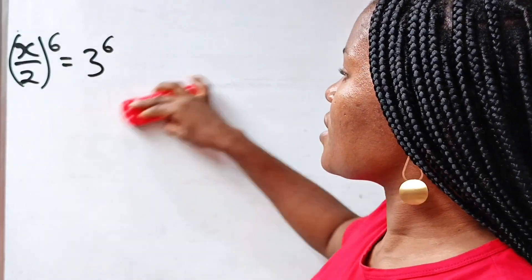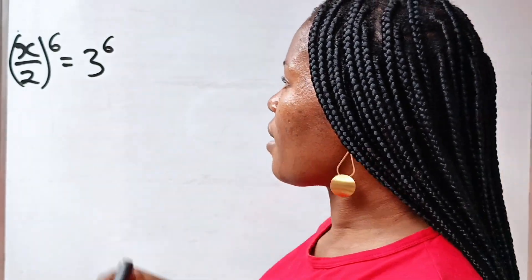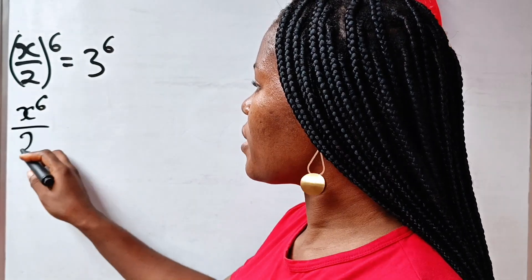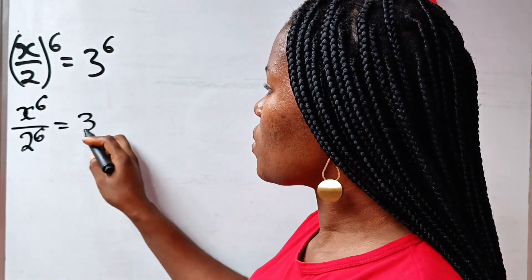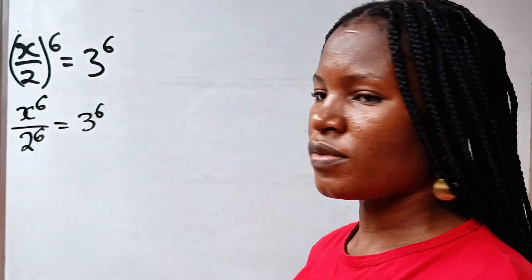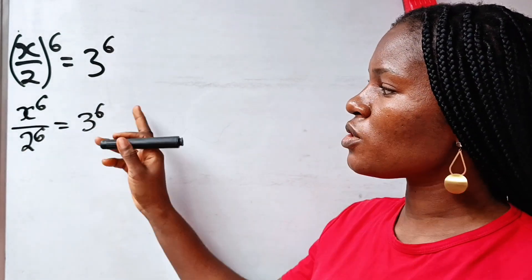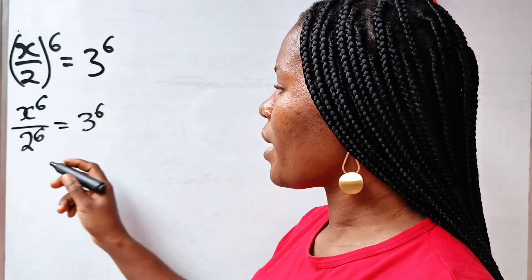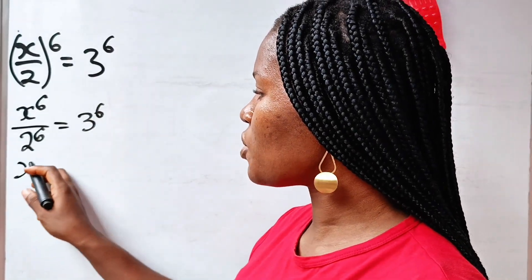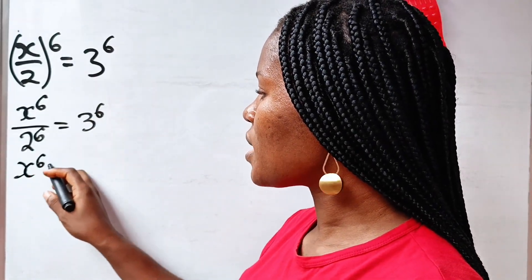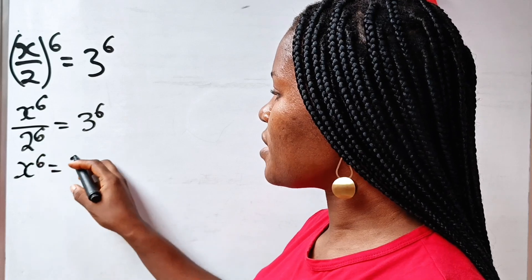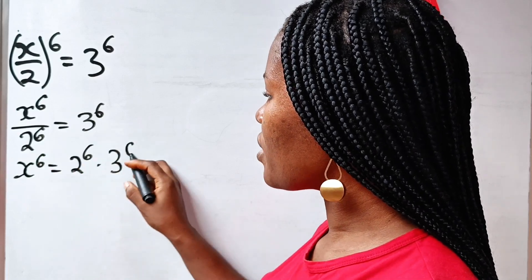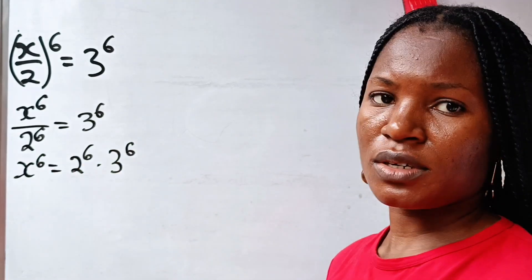So if we do that, we have x to the power of 6 divided by 2 to the power of 6 is equal to 3 to the power of 6. Now we are going to cross-multiply. If we cross-multiply, we have that x to the power of 6 is equal to 2 to the power of 6 multiplied by 3 to the power of 6.